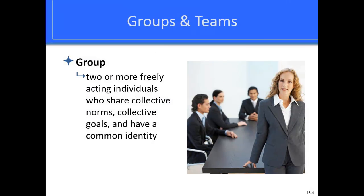Groups may be of two different types: formal or informal. A formal group is established to do something productive for the organization and is headed by a leader. It may be a division, department, work group, or committee, and may be permanent or temporary. People are usually assigned to teams according to their skills and the organization's requirements. An informal group is formed by people seeking friendship and has no official appointed leader, though a leader may emerge. Informal groups can advance or undercut the plans of formal groups and can actually be even more productive than formalized groups.